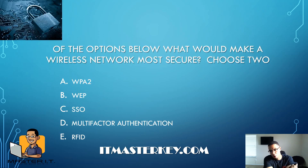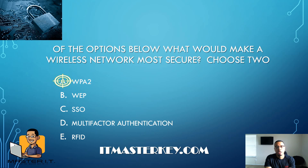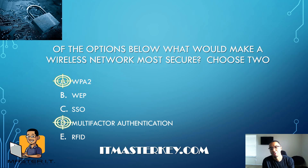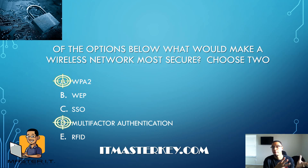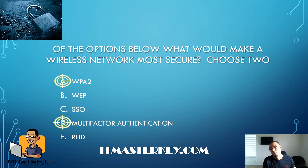Of the options below, what would make a wireless network most secure? Choose two. Choose WPA2 as an encryption and multi-factor authentication. Multi-factor authentication means that before you authenticate to a device or network, you need more than one form — such as a username and password plus a security badge — so you need multiple factors to gain access.